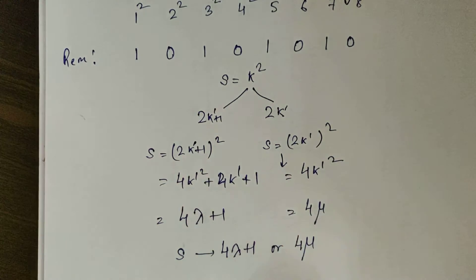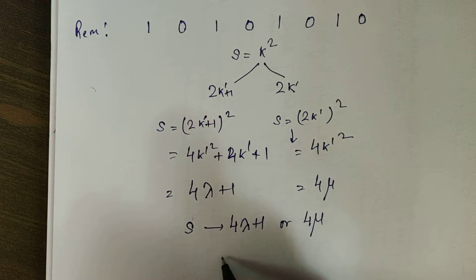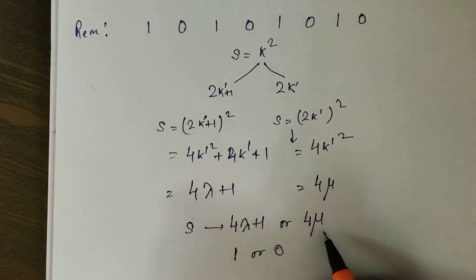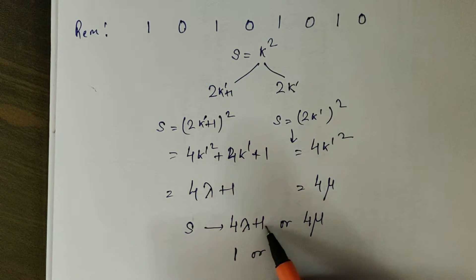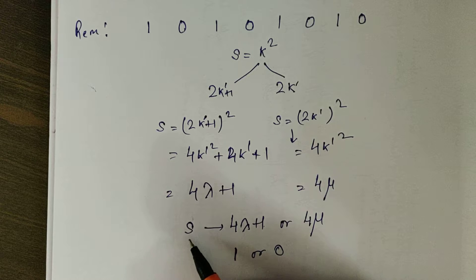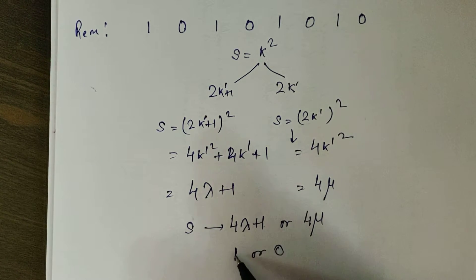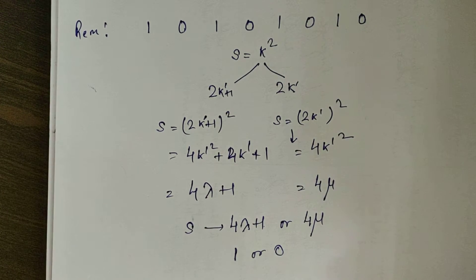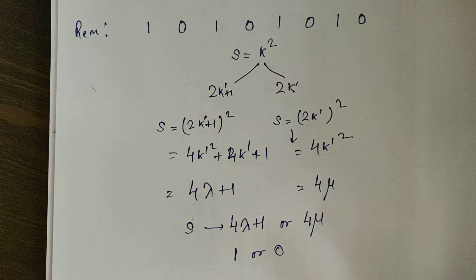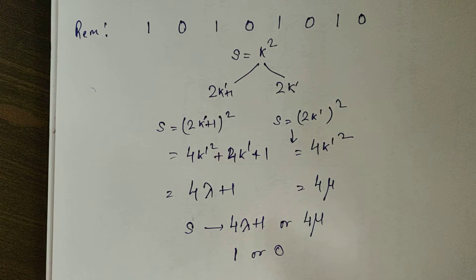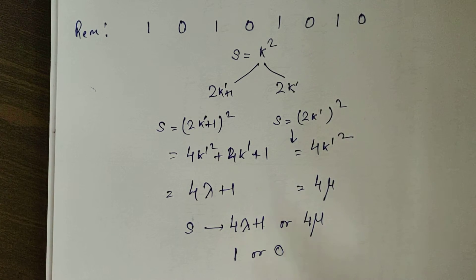This means that on being divided by 4 the remainder will be either 1 or 0. If the perfect square is of the form 4μ the remainder is 0, and if it is of the form 4λ + 1 the remainder is 1. That is, if the perfect square is the square of an even number the remainder is 0, and if it is the square of an odd number the remainder is 1.